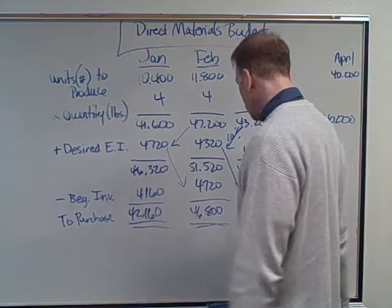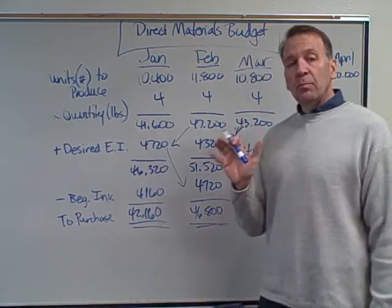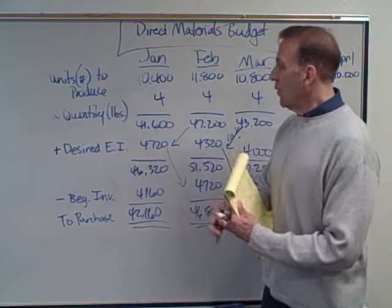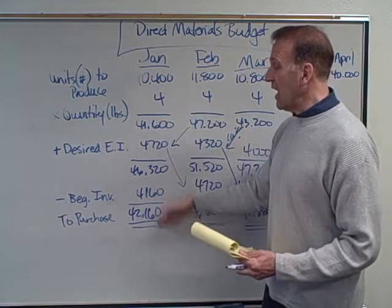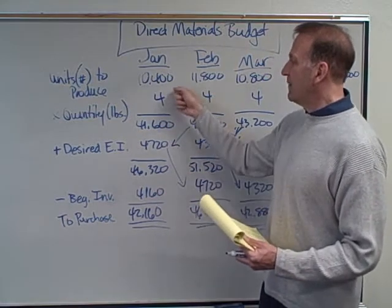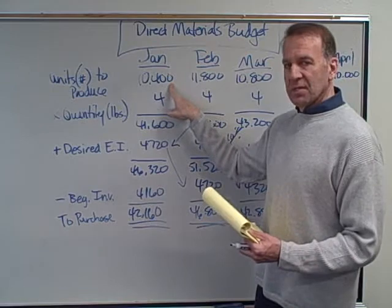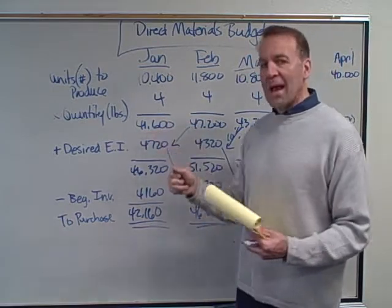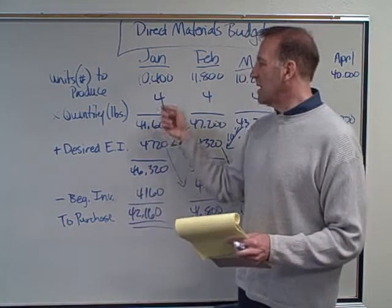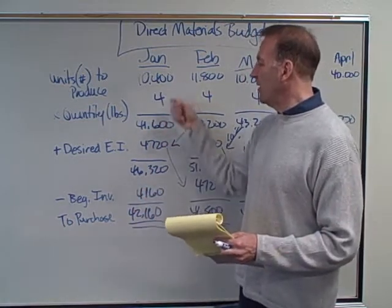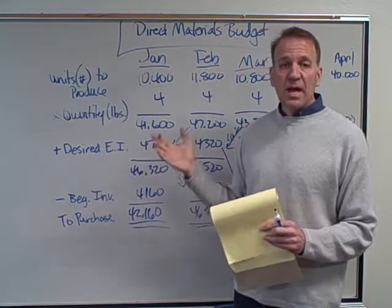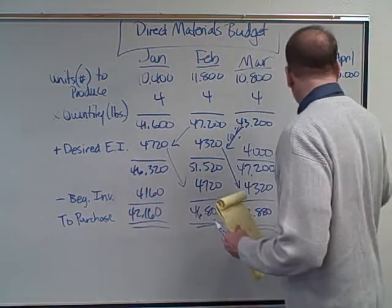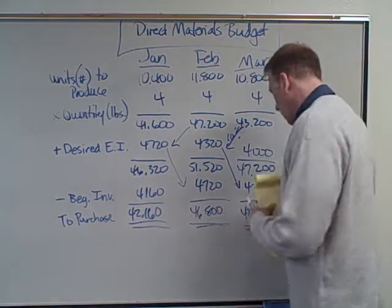You'll notice this budget is very similar to the production budget. Once you convert to pounds the setup is the same. The first step is converting production unit numbers into the materials needed — in this case, converting cases into pounds of tomatoes for the direct materials budget.